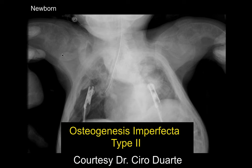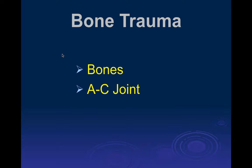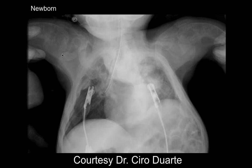This is osteogenesis imperfecta type 2. Those are fractured bones — you can see the cortical margins. There's decreased density, deformity, and thickening of the bones in the shoulder bilaterally.